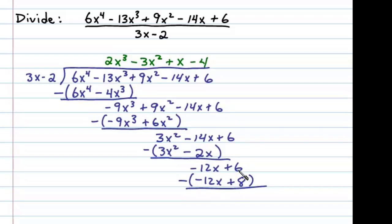And that leaves us with 6 minus 8 or negative 2 as the remainder. So we can add a term with negative 2 divided by the divisor, in this case 3x minus 2.